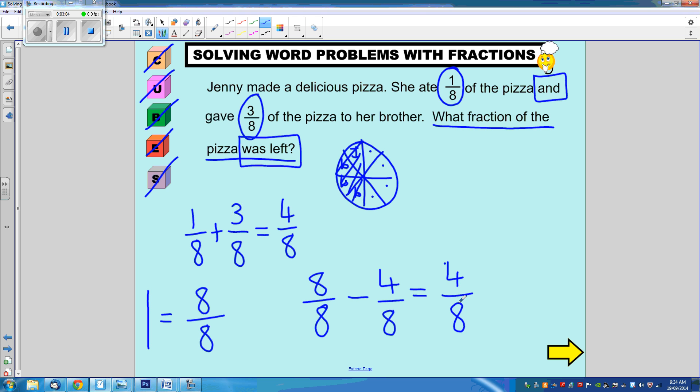And when I'm checking, it's always good with fractions to see if you can simplify. 4 eighths is equivalent to 1 half, which is also really easy to see in the diagram. And that's how we use the CUBES method to solve a word problem.